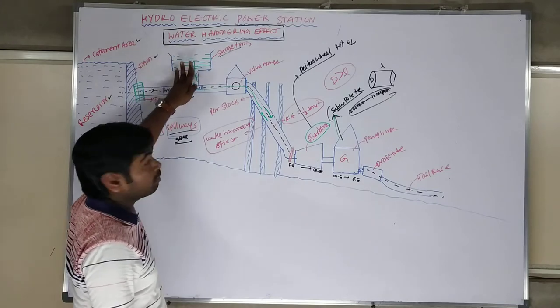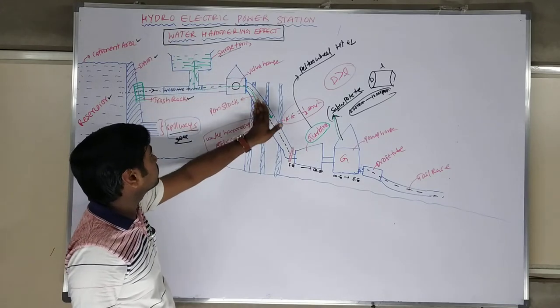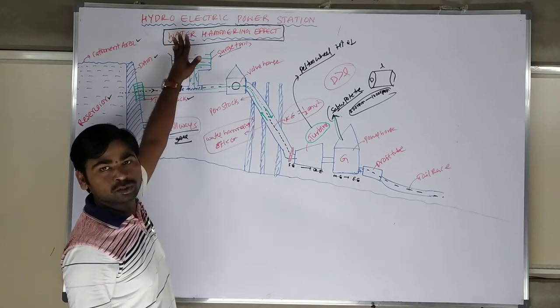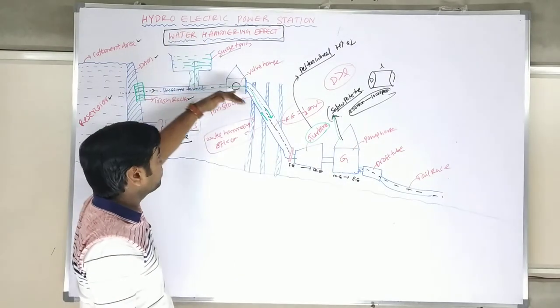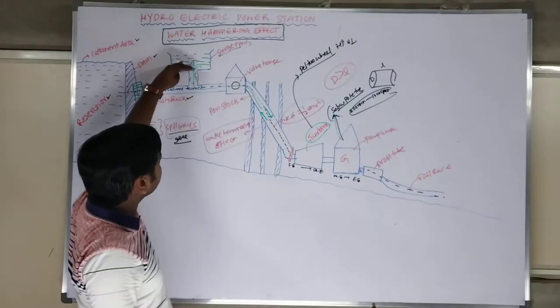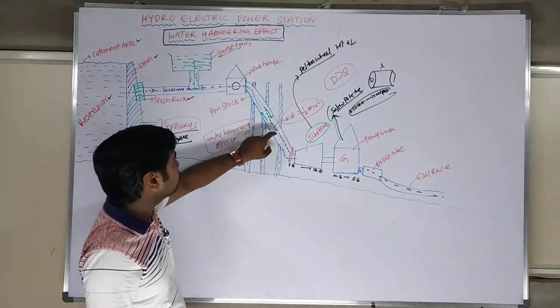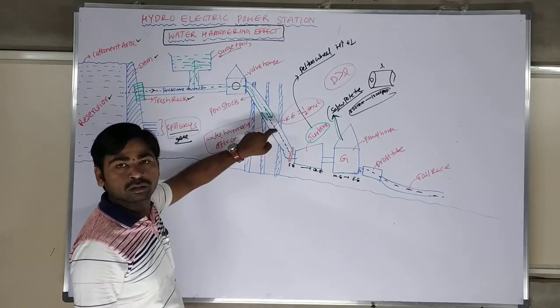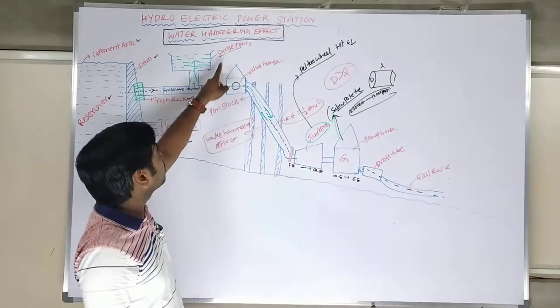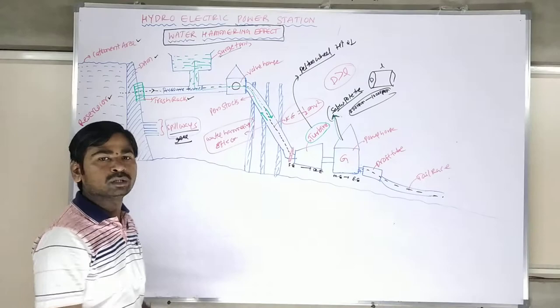The surge tank is a bypass mode. When high pressure occurs, water will go up and be stored temporarily. When the pressure decreases, the water level will go down, go back to the penstock. Therefore, this water hammer effect which will be developed in the penstock will be protected by the surge tank.